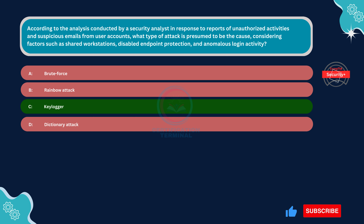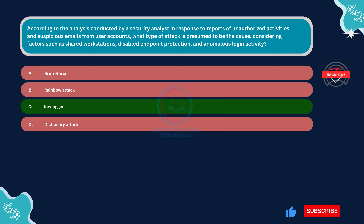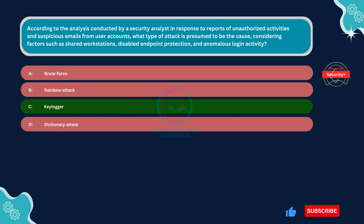Option D, dictionary attack, is incorrect. A dictionary attack involves using a predefined list of commonly used passwords to attempt unauthorized access to user accounts. While plausible, the observed factors such as shared workstations and disabled endpoint protection suggest a more sophisticated attack vector such as a keylogger. Additionally, the anomalous login activity may not align with the typical pattern of a dictionary attack.